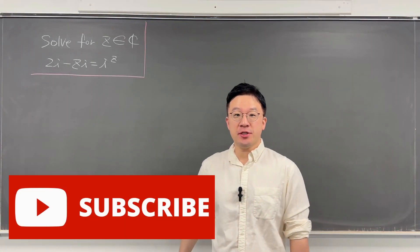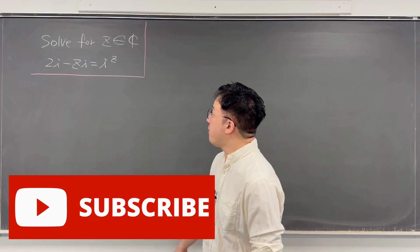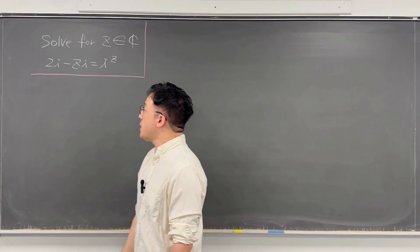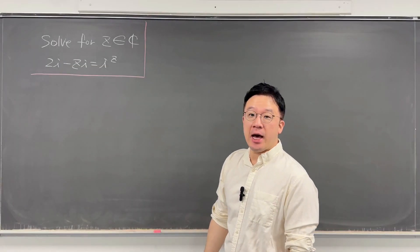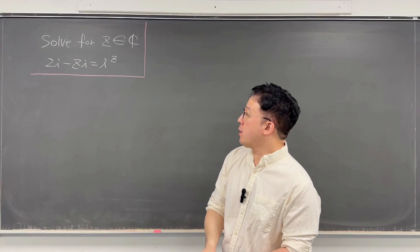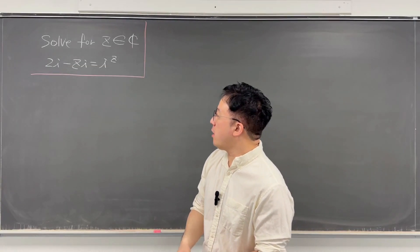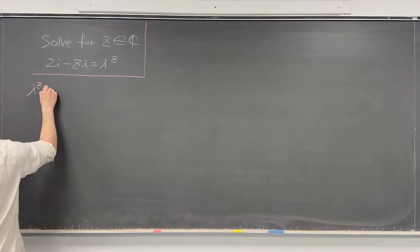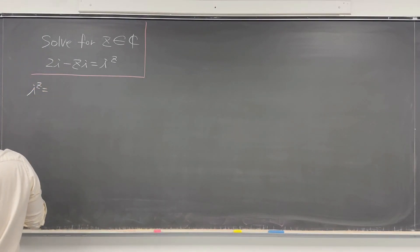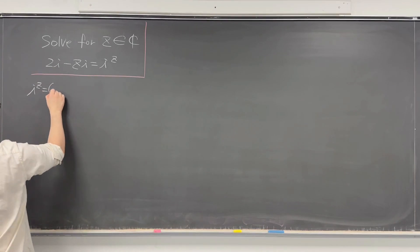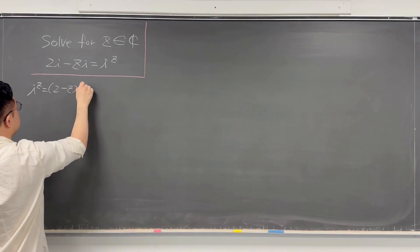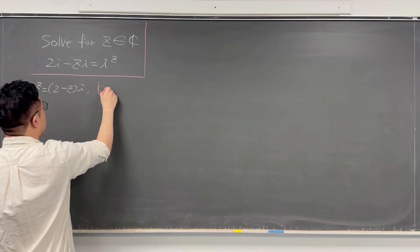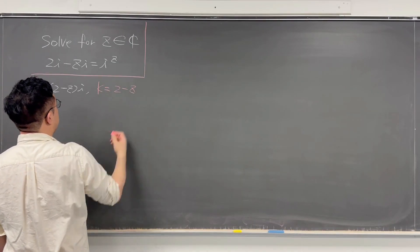We have an interesting complex equation. The question is: solve for z, that is a complex number. We have 2 times i minus zi equals i to the power of z. So first of all, let's rewrite this. i to the power of z is the same as — let me pull this i out — 2 minus z times i. Let me call this k as 2 minus z.